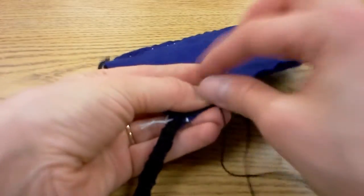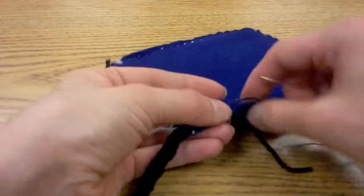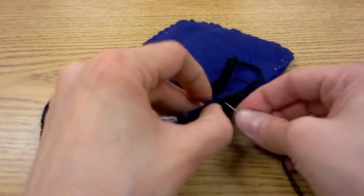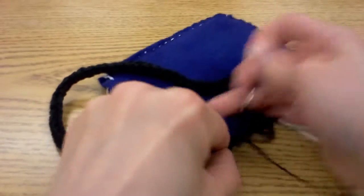When you think you have enough on there that your strap isn't going to come undone, then you can tie it off, and repeat the same thing on the other side.